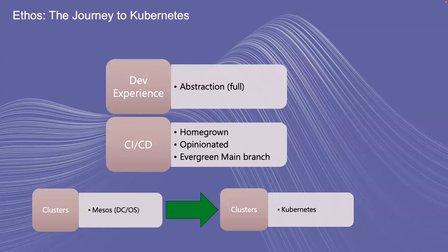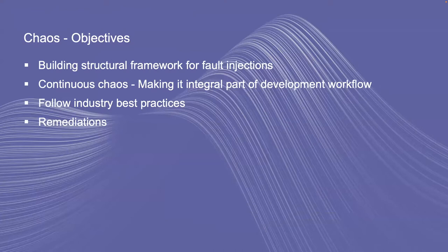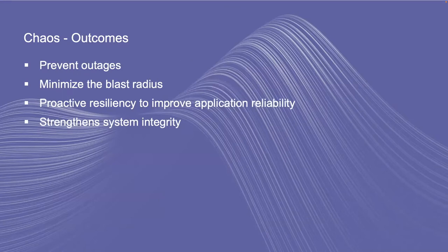When we talk about chaos, these are the objectives we have in mind: building a structural approach for injecting faults rather than following any manual process, and then continuous chaos — because once you do chaos, it's good to integrate with your deployment pipeline and follow industry best practices. The outcomes include preventing outages and, if something does happen, keeping the blast radius of the impact as minimal as possible. Proactively, we are trying to improve the resiliency of the application and the integrated system, because all systems are interacting with so many other systems.